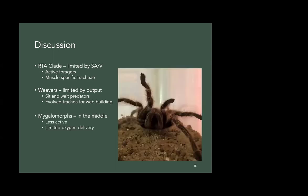The mygalomorphs are kind of weird. They're in the middle. They're less active, right? There is some activity with the males. I didn't split them up by sex. But they also have a different oxygen delivery system, right? They're more reliant on their book lungs and their open cardiovascular system. So this could be why they're kind of scaling in the middle between the 0.66 and 1.